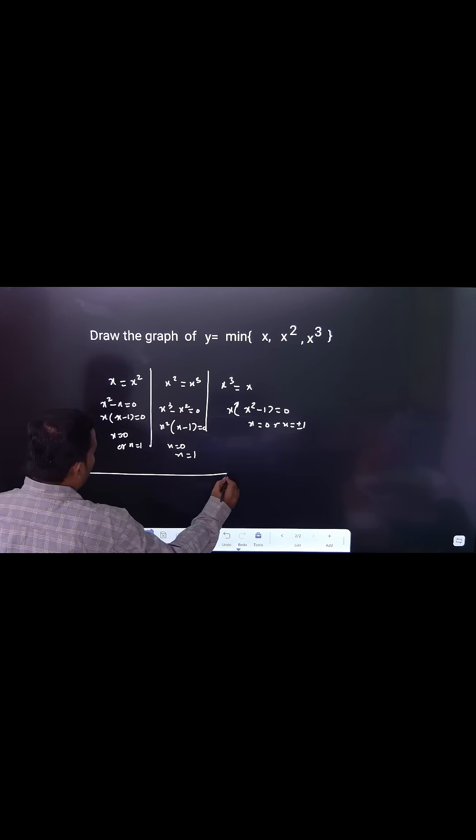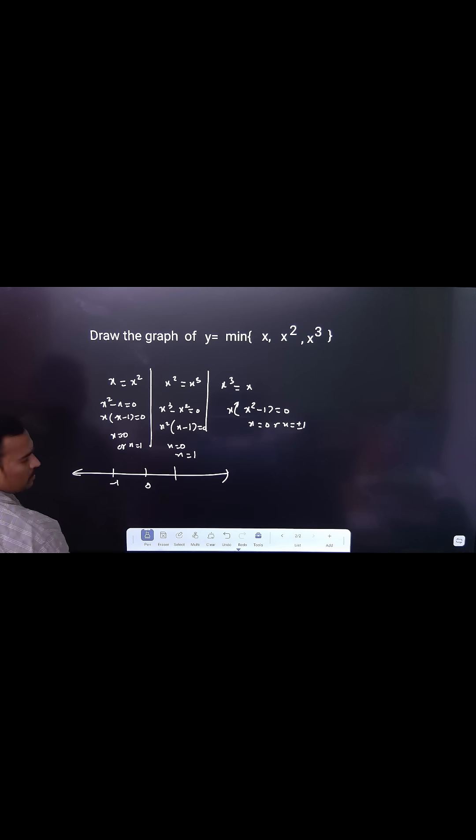You can see the breaking points here are minus 1, 0, and 1. The whole real number line breaks into: less than minus 1, minus 1 to 0, 0 to 1, and more than 1.